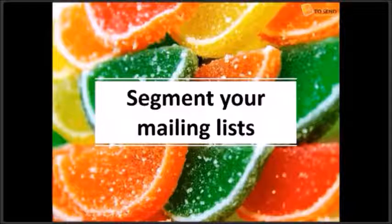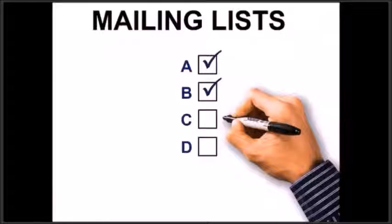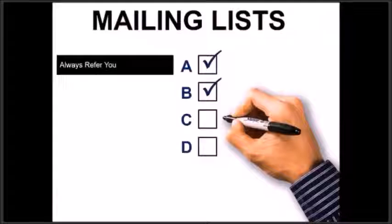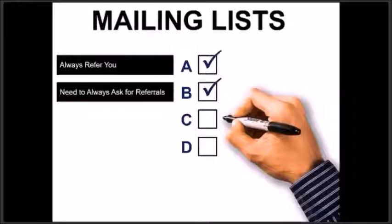However, here are two strategies you can put into place. Sort your contacts into A, B, C, and D clients using the following criteria. A's are people who will always refer you. B's are people who would refer you if they were taught how to, or if you ask them to refer you.